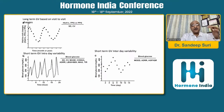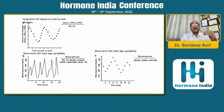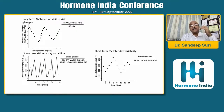For short-term intraday glycemic variability, you can use standard deviation, coefficient of variance, MAGE, CONGA, ADRR, LBGI, HBGI, MAG, and time in range. For short-term interday variability, MODD, ADRR, AGP, or interquartile range can be used.